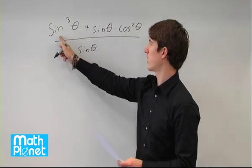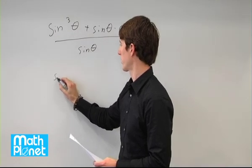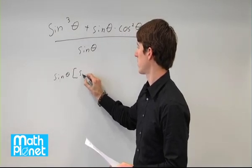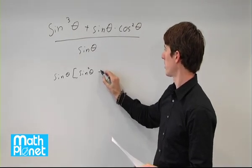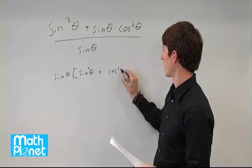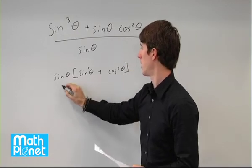We can factor out a sine from both of these. So we can say sine theta times, now we have sine theta squared plus cosine squared theta all over sine.